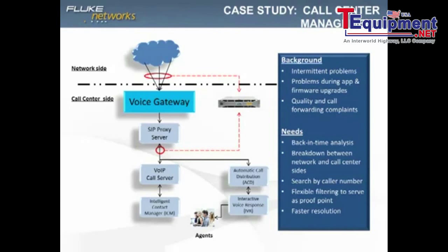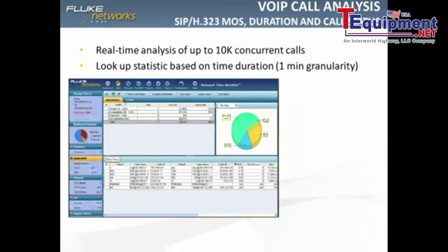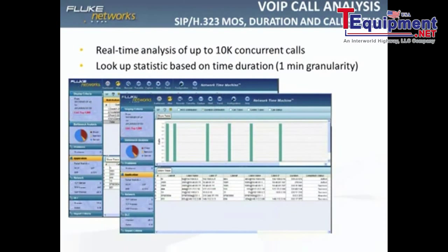They needed to have a breakdown between the network and the call center sides, have the filtering to be able to serve as a proof point, and have the ability to search by caller or callee number, and most importantly, have faster resolution to solve problems quicker as well as easier for their overburdened IT team. The enterprise deployed Network Time Machine to help them with these challenges.